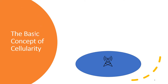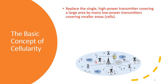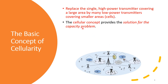The basic concept of cellularity is this: we replace one high-power transmitter that covers a large area with many low-power transmitters each covering a small area. This big area covered by one transmitter is replaced by lots of small cells, with lots of transmitters covering the same area. The cellular concept provides the solution to the capacity problem.